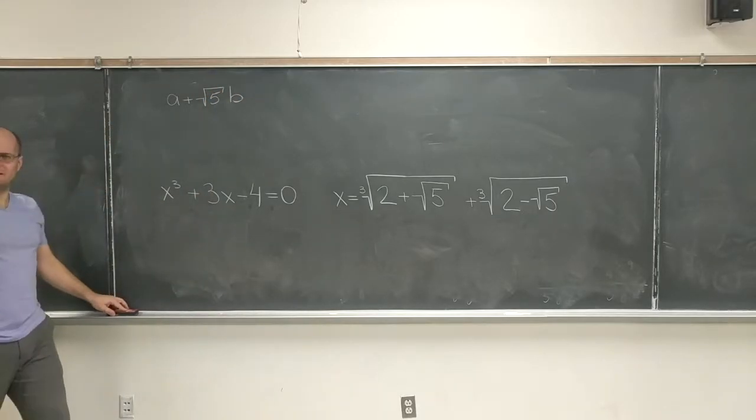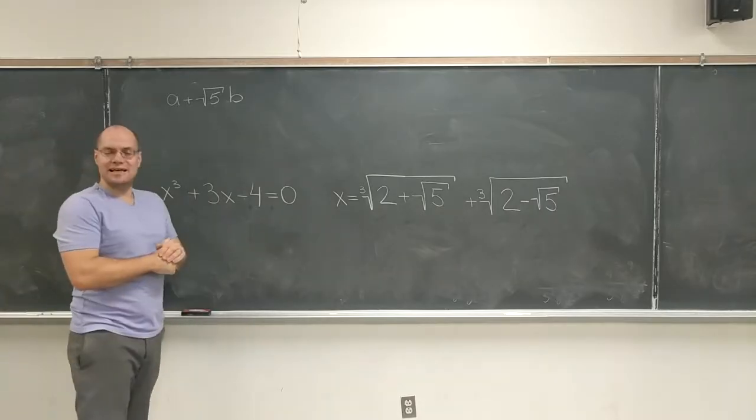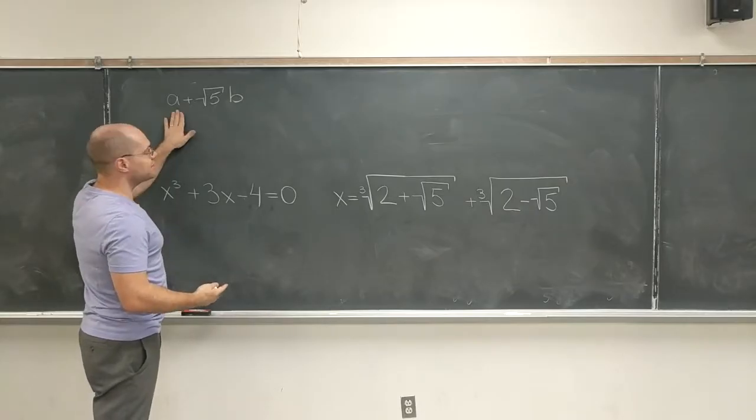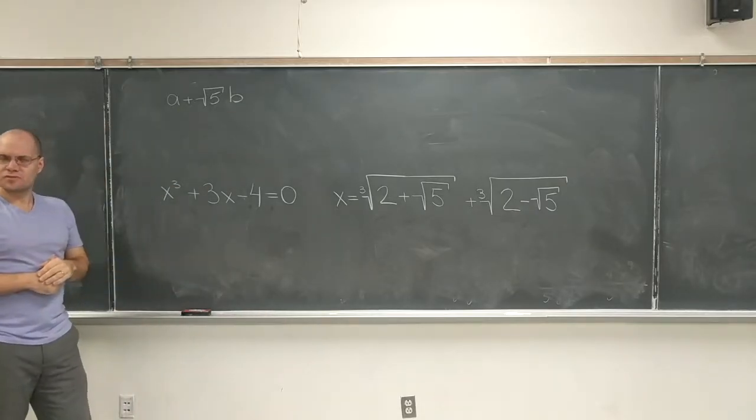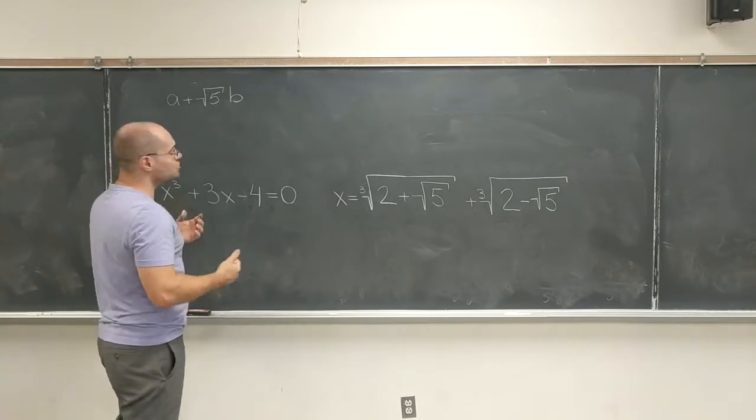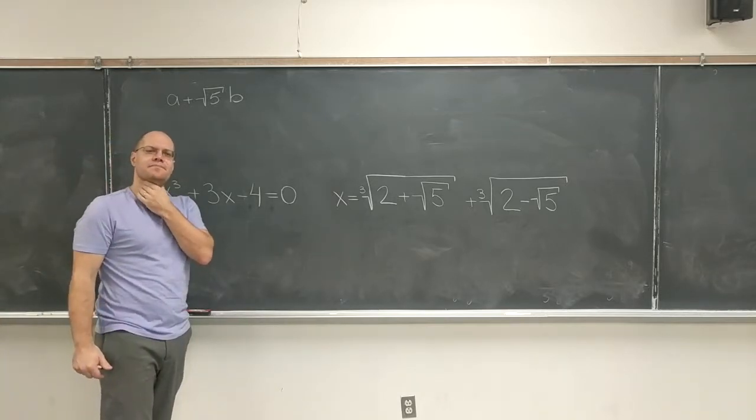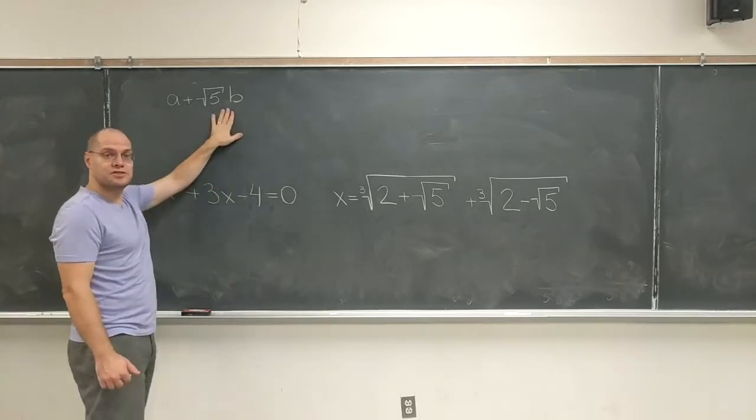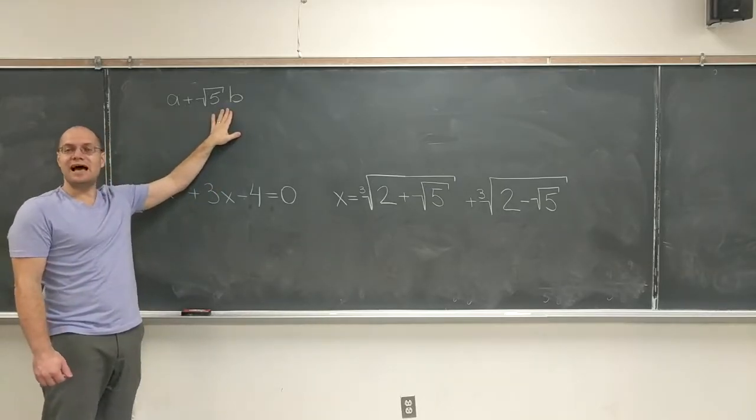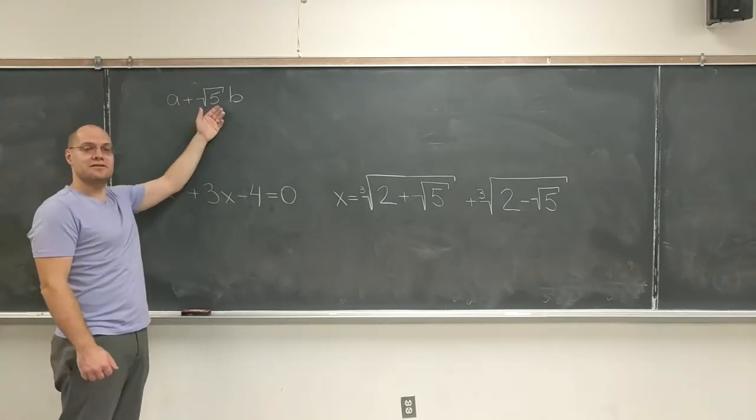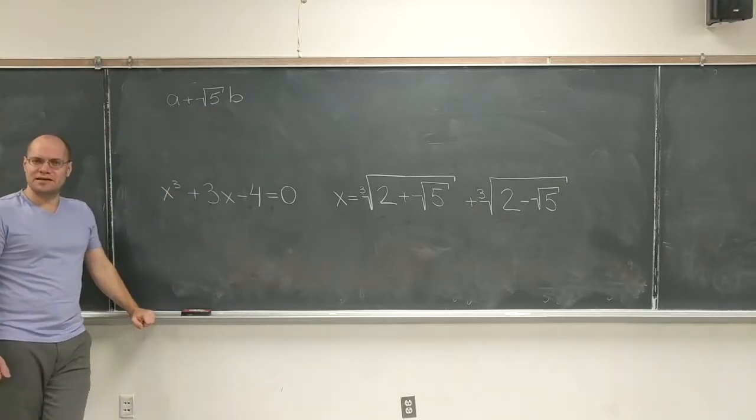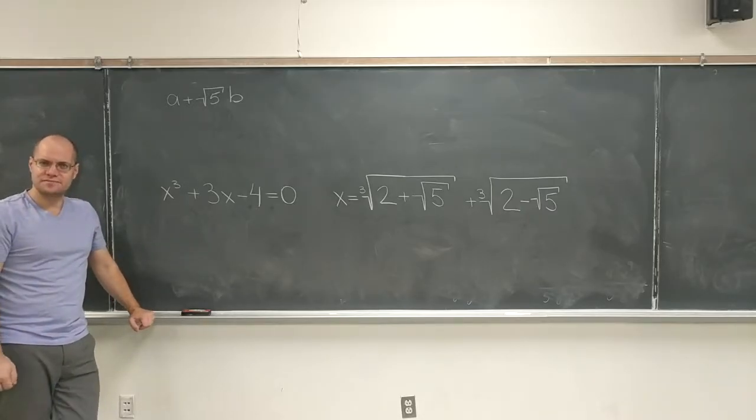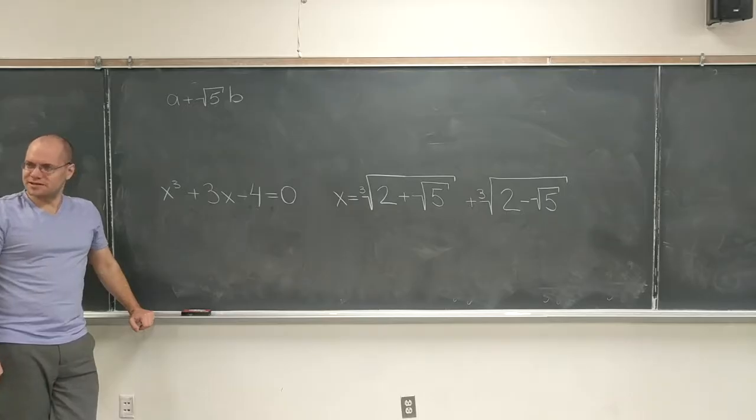He started thinking about the numbers of the type a plus square root of 5b. And he realized that these are fascinating numbers. Because, let's say a and b are rational numbers. So these numbers are no longer rational, he knew that. But what do they represent? For instance, if we were to take two numbers of this kind and add them together, would we get another number from the same family? Is it pretty clear that it is?